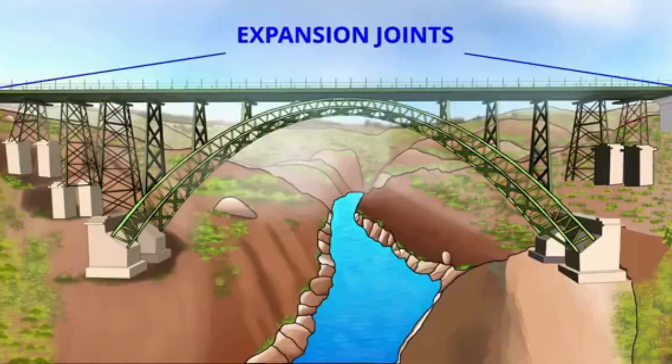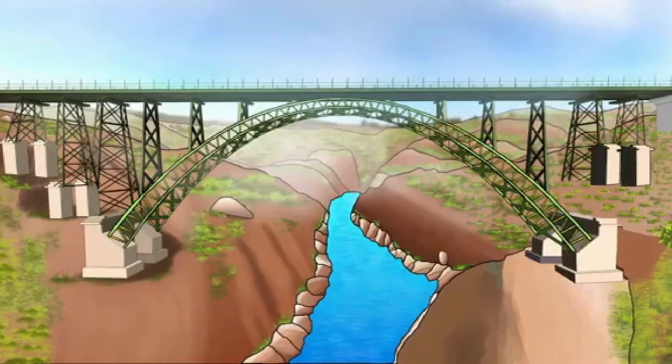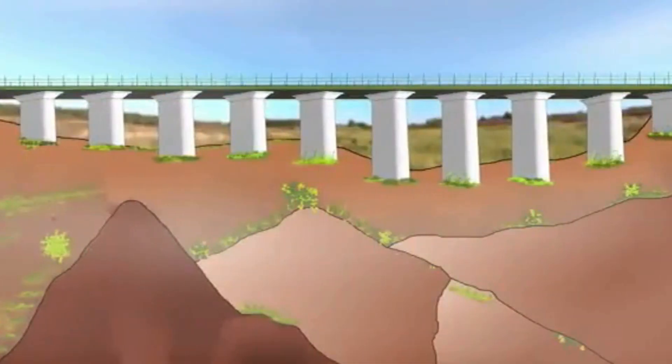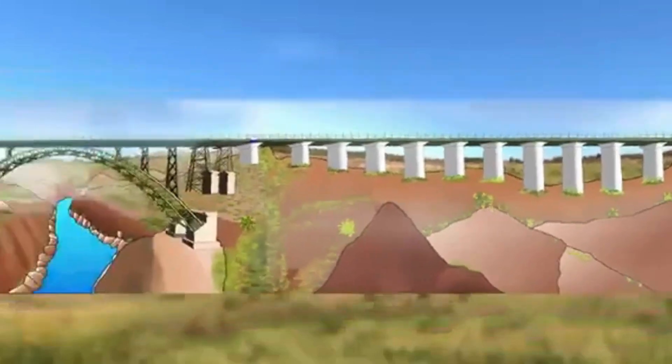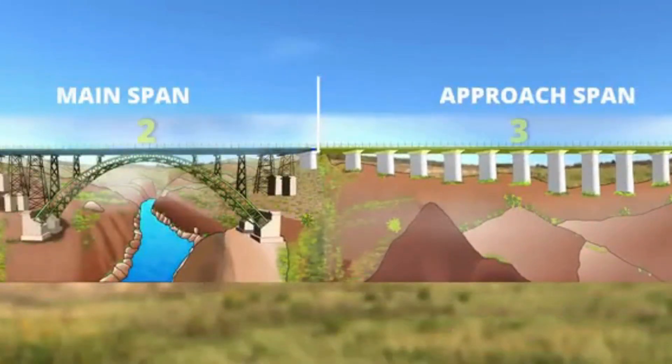So far, we've seen two expansion joints of Chenab bridge. It should be noted that the bridge has one more expansion joint, but slightly away from the arch section. In short, the three expansion joints separate the bridge into four pieces.